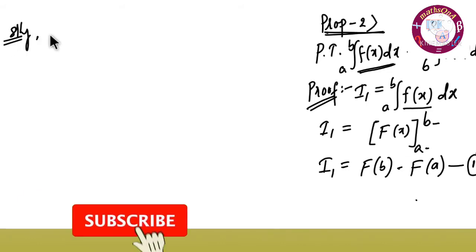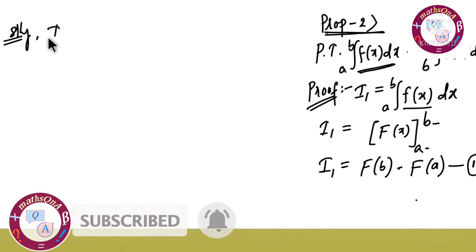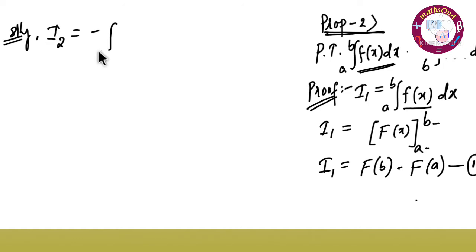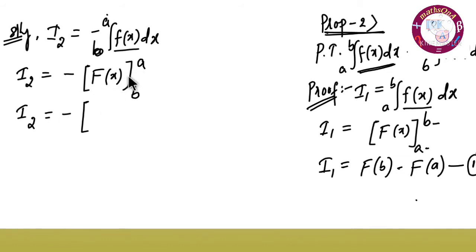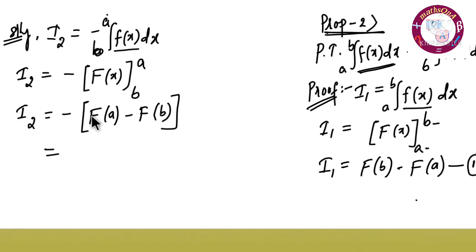Similarly, let us consider the second integral i2 equal to minus of integration of b to a f of x dx. Integrating, small f of x becomes capital F of x. Applying limits b to a: i2 equals minus of bracket F of a minus F of b, which gives minus F of a plus F of b, so i2 equals F of b minus F of a. This is equation number two.